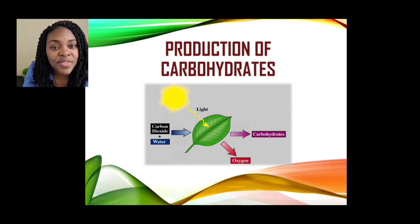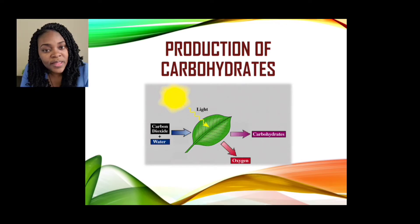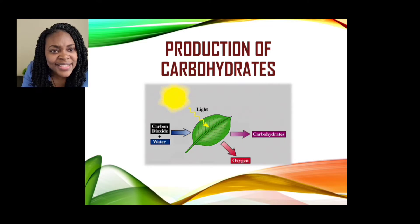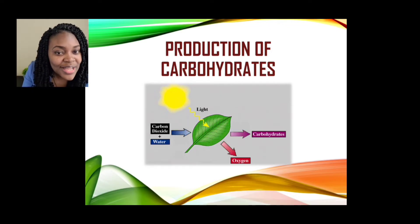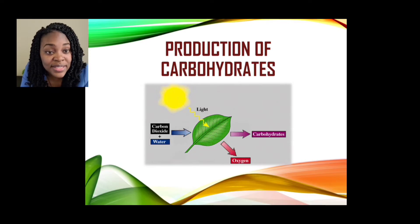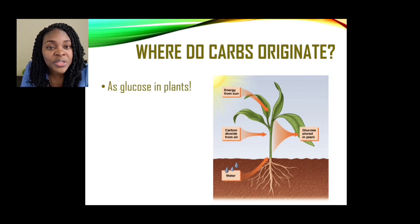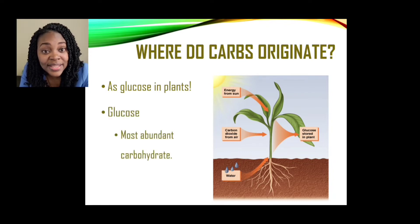Let us look at the production of carbohydrates. I'm drawing a little on your science knowledge based on what is being displayed on your screen. Can you tell which process is taking place? We see carbon dioxide plus water and light — what does that equal? If you mentioned that process is called photosynthesis, you are correct. Carbohydrates originate as glucose in plants, and glucose is the most abundant carbohydrate.